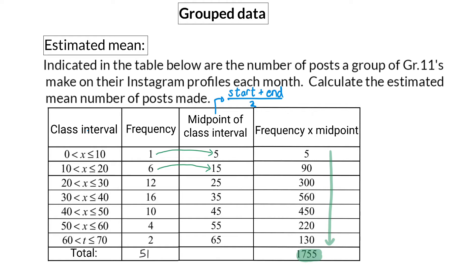Finally, to determine our estimated mean we are going to take this total of 1755 and divide it by the number of values, which is 51. The estimated mean will then be 34.4 posts.